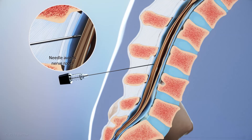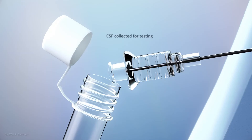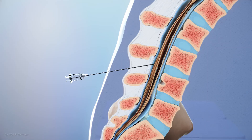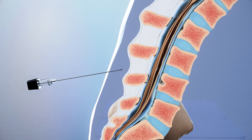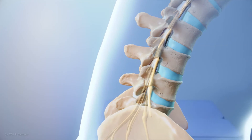Once the area is sufficiently anesthetized, the spinal needle is advanced until it reaches the spinal canal. Although the needle may come into contact with the nerve roots, they are floating in spinal fluid and move away from the needle, preventing damage. Once the needle is in place, the spinal fluid drips from the needle hub under the natural pressure of the spinal canal, and 10 to 15 milliliters of fluid is collected in sterile vials. This entire procedure usually takes between 20 and 25 minutes.